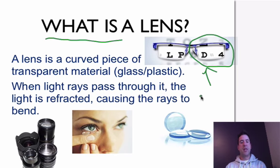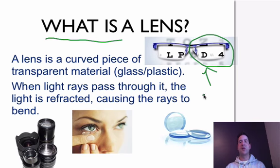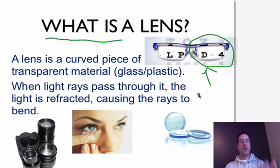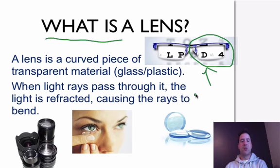The first thing we need to know is a lens is a curved piece of transparent material — so glass or plastic. Light is able to travel straight through it, and we can see images through the transparent material. When light passes through it, the light is refracted, causing the rays to bend.